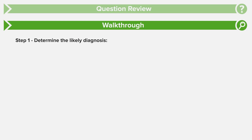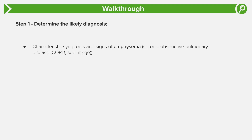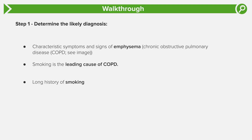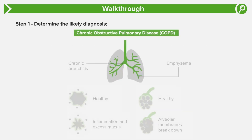Now let's walk through this question together. The first thing we need to do is determine the likely diagnosis. This patient's characteristic signs and symptoms are consistent with emphysema, a chronic obstructive pulmonary disease, or COPD. Smoking is the leading cause of COPD, and this patient has a significant smoking history of 40 pack-years, which is very high. Let's refer to our image here of COPD and the two subtypes to better understand the condition.